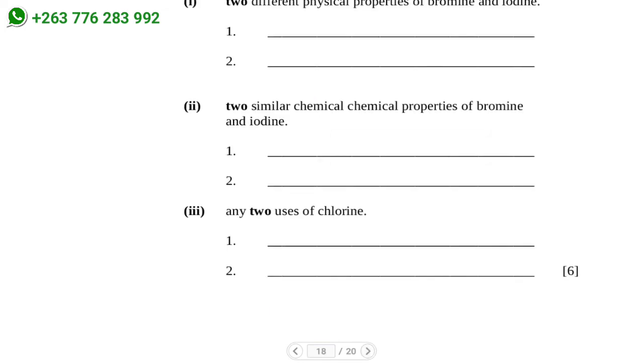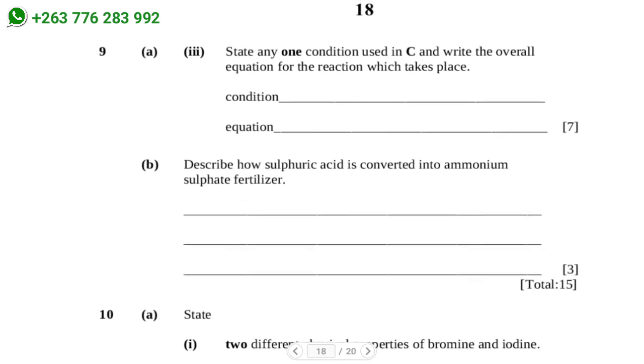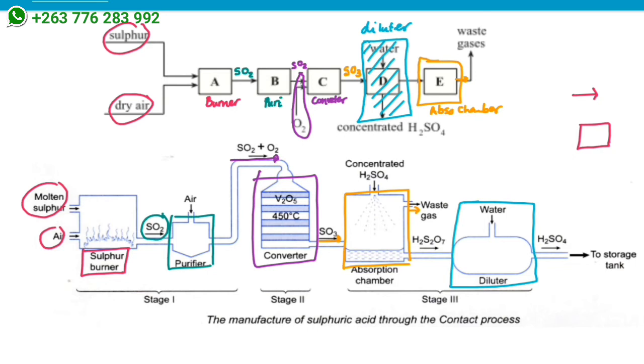The next question states: state any one condition used in C and write the overall equation of the reaction that is taking place. At C, the converter, the reaction is combining sulfur dioxide plus oxygen to get sulfur trioxide. The conditions necessary are the catalyst, which is vanadium pentoxide, and a temperature of 450 degrees Celsius.